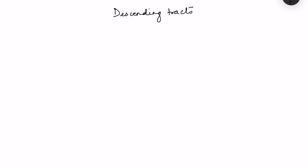Descending tracts are the tracts which descend from the cortex or from the brain stem and supply the muscles of the body for voluntary and involuntary control of movements.